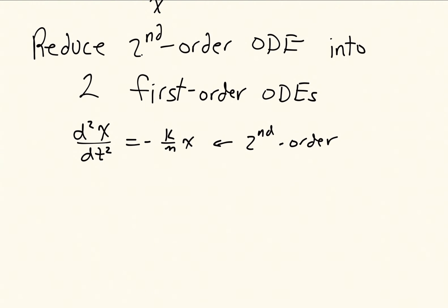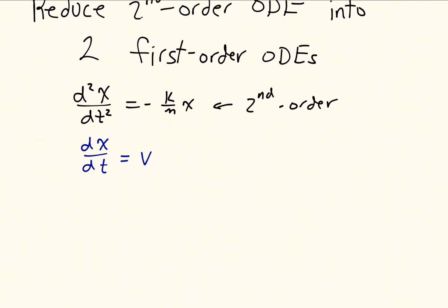And to write that as two first-order equations, we can recognize that the change in position with respect to time is just the velocity, v. So I've introduced a new variable, v. And we know that dv dt is the acceleration, which is the same as d squared x dt squared. And that's just using our definitions of position and velocity from physics class.